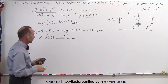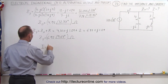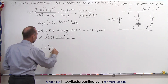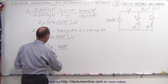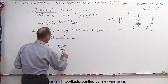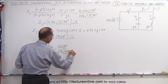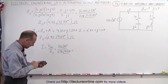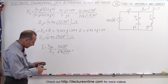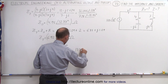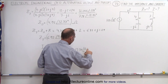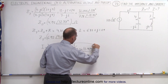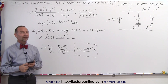Now we're ready to find the current in the circuit. The current I equals the input voltage divided by the total impedance. The input voltage is 120 volts with a phase angle of 10 degrees, divided by the total impedance 6.92 with a phase angle of 9.07 degrees. So we get 120 divided by 6.92, which gives us 17.34, with a phase angle of 10 minus 9.07 — that's 0.93 degrees — and that would of course be amps. So this is the current in the circuit after we find the total impedance, and that's how it's done.